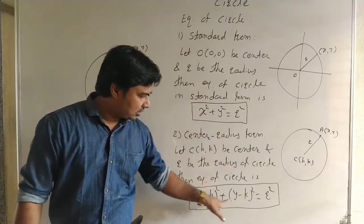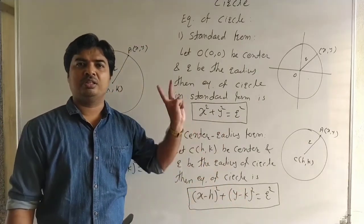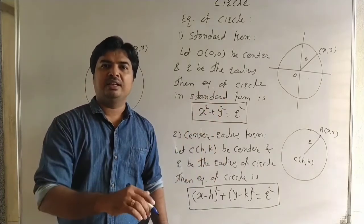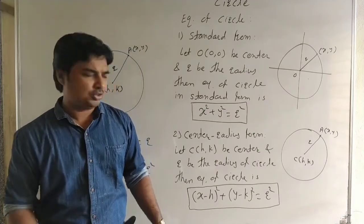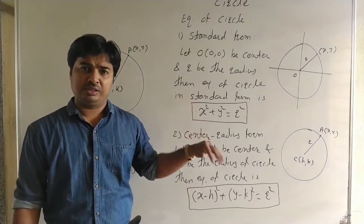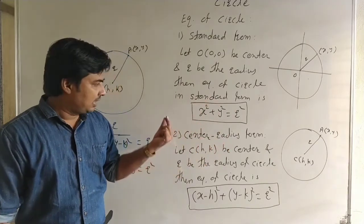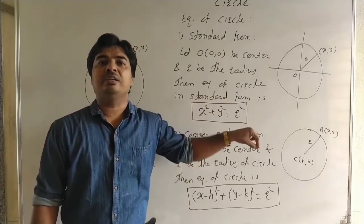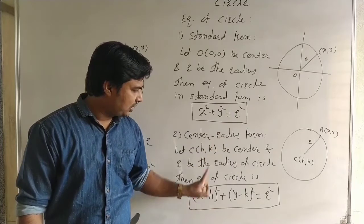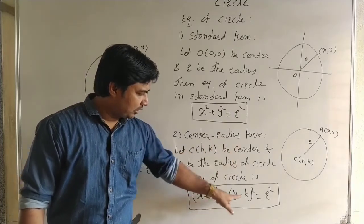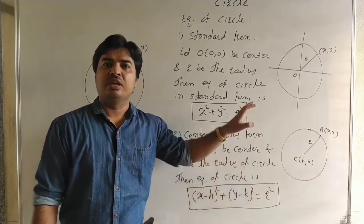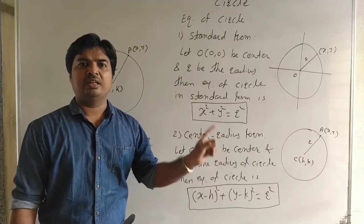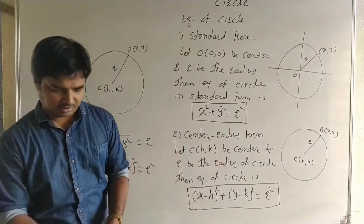The main point: to find the equation of circle we need only the center and radius. If center is (h, k) and radius is r, we put those values directly into x minus h whole square plus y minus k whole square equals r square. To find the equation of circle, we know only the center and radius of the circle. See carefully: center is h, k and radius is r; we put the value of center and radius directly. In the next lecture we will take examples.